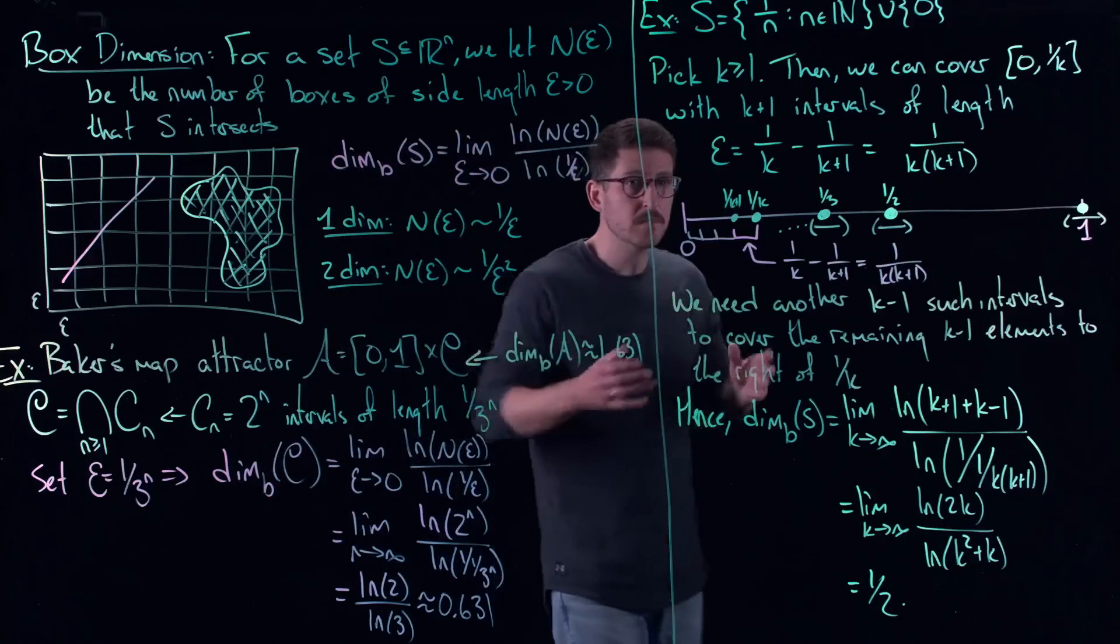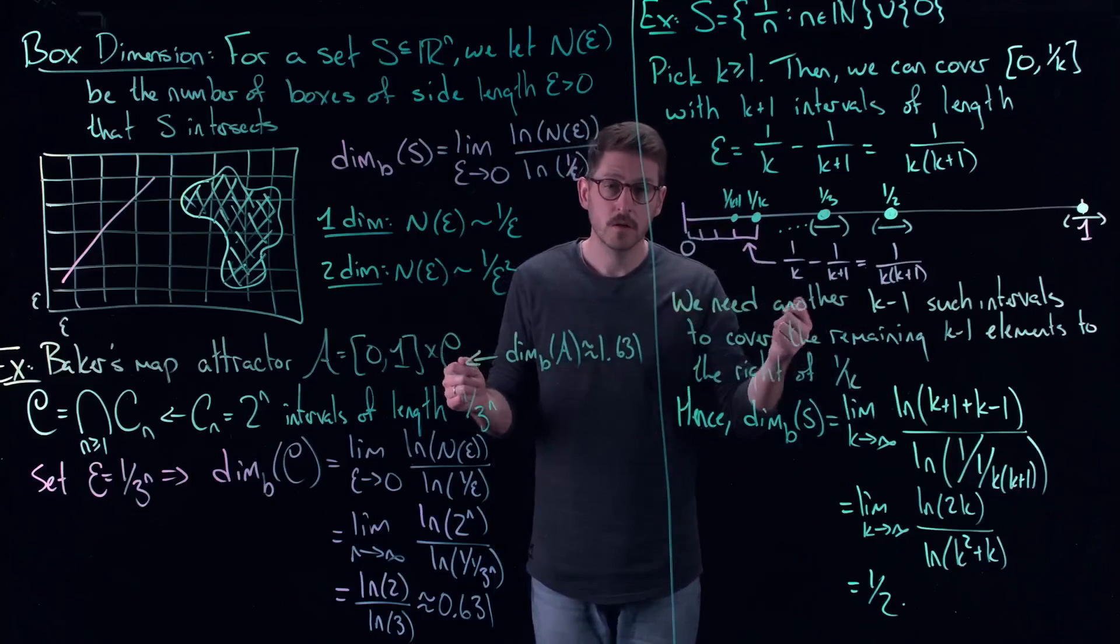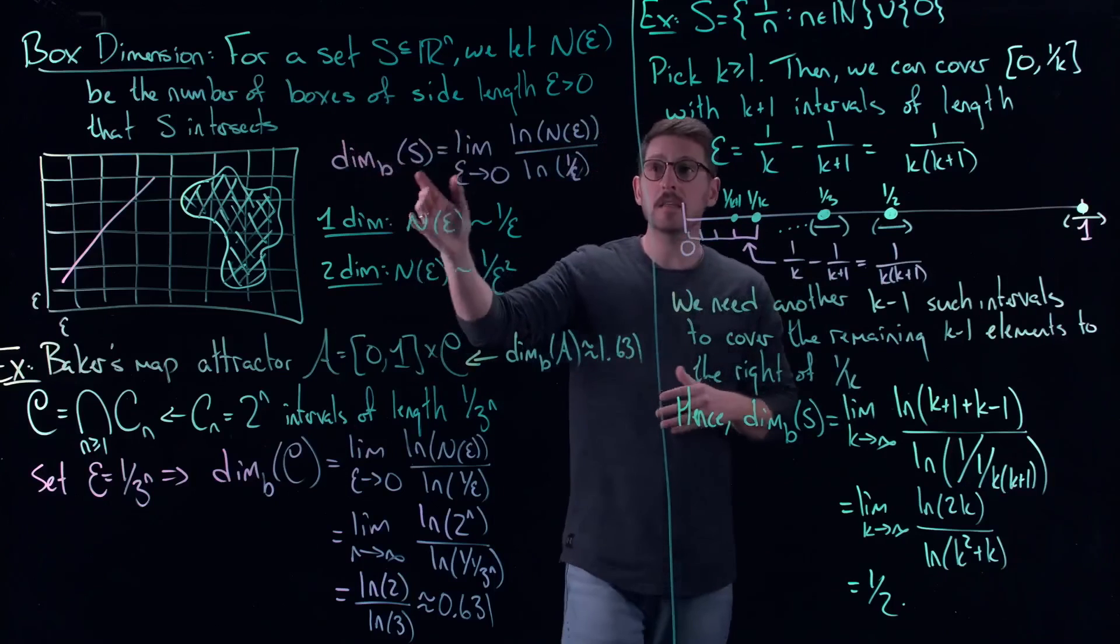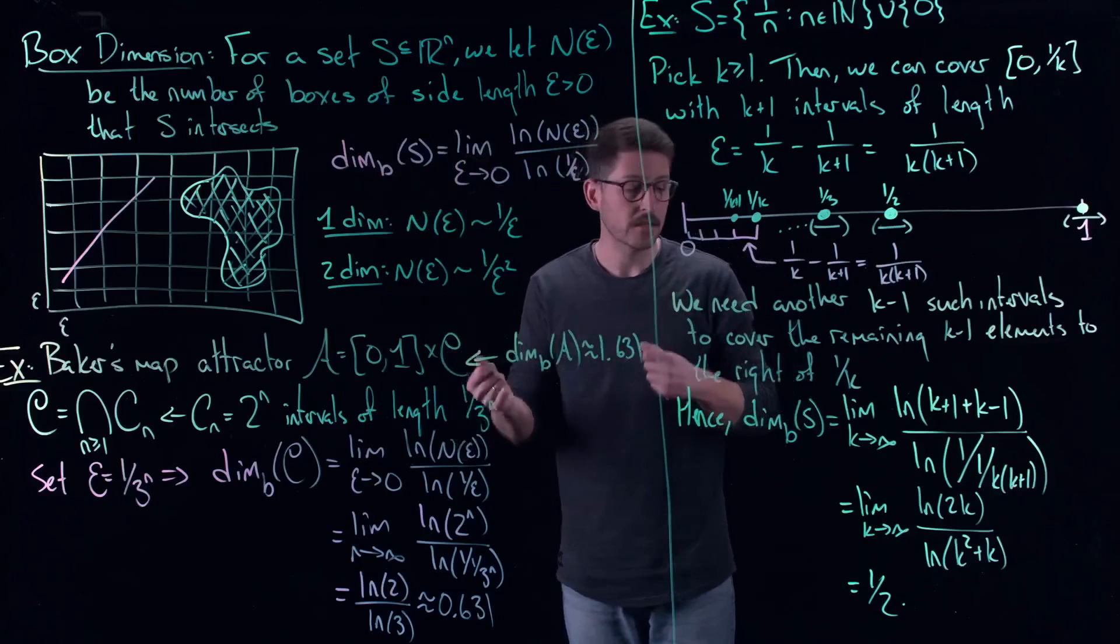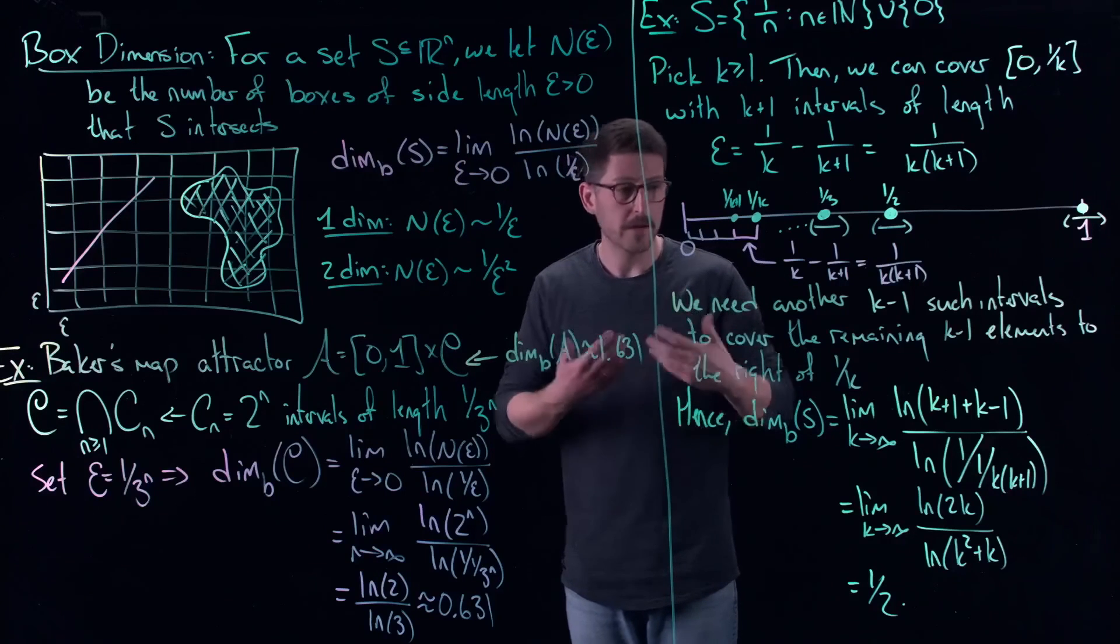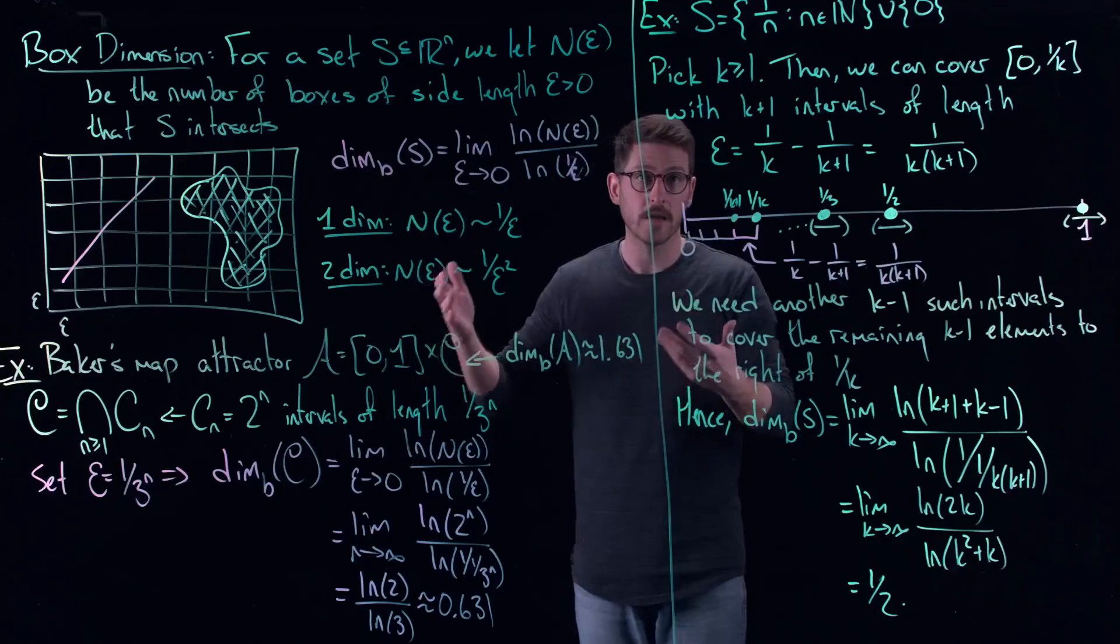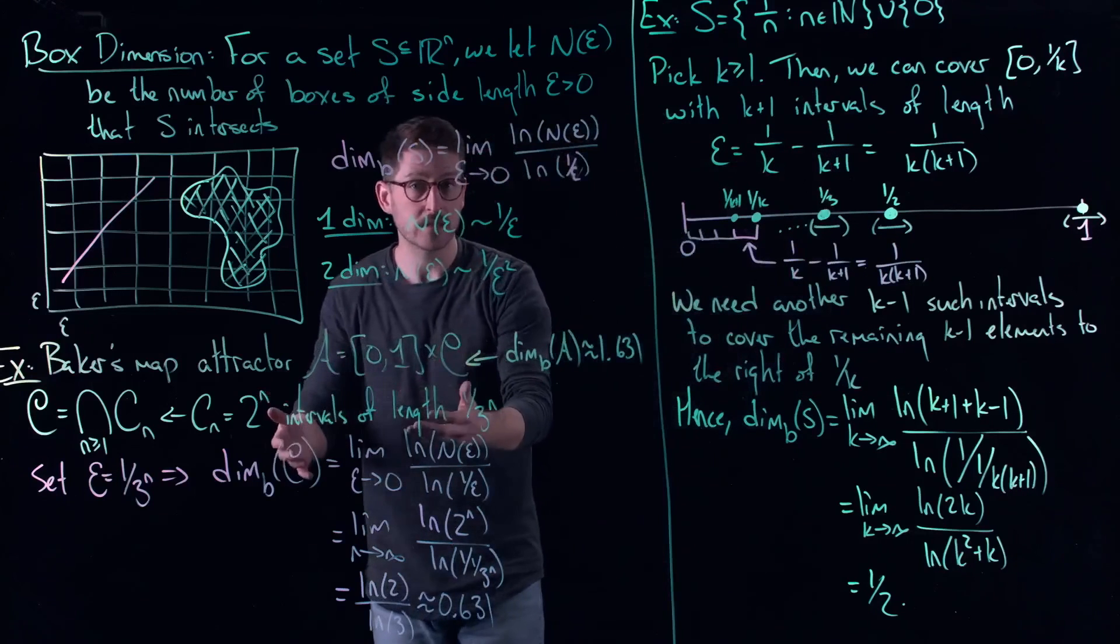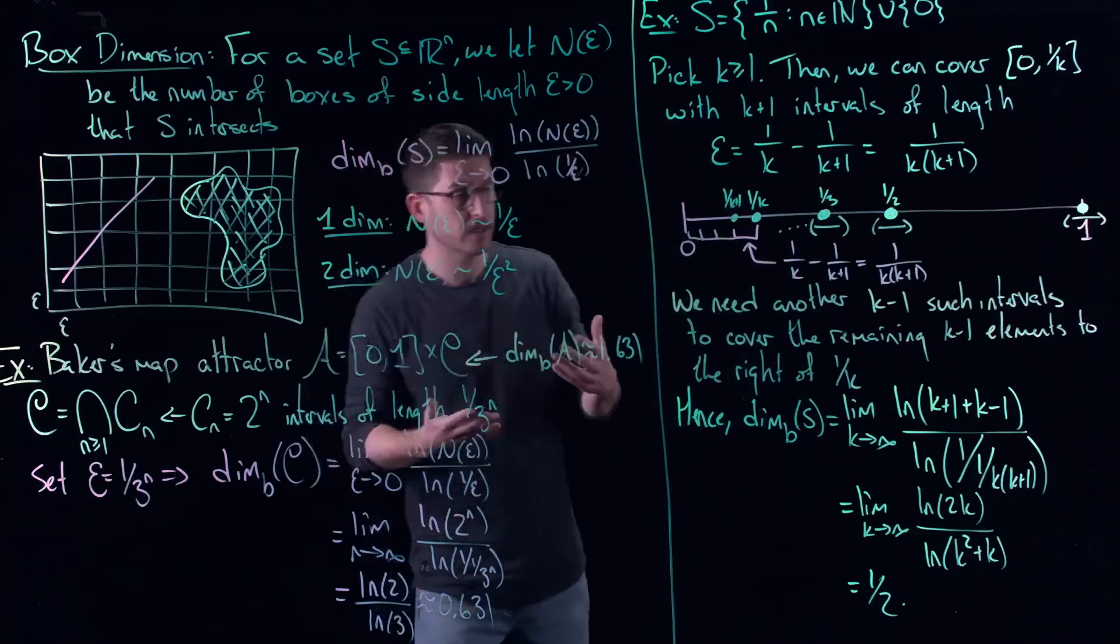So whenever somebody talks about chaotic systems, and they talk about the dimension of something being 1.234, this is what they're typically talking about. They're talking about this box counting dimension. And really, this is just a way for us to quantify whether or not something is a fractal. So we say that things that don't have an integer dimension are fractals. So there are lots of different and sort of competing ways to think about fractals. But this is one way to quantify it analytically. So in this case, we would say this set is a fractal. In this case, we would say this set is a fractal. We would not say a line or square are fractals because they have integer box dimensions.